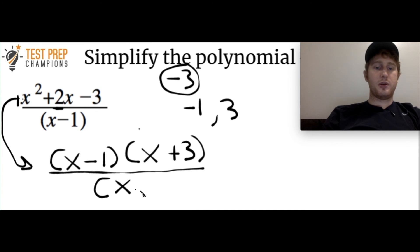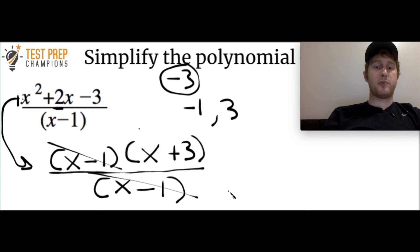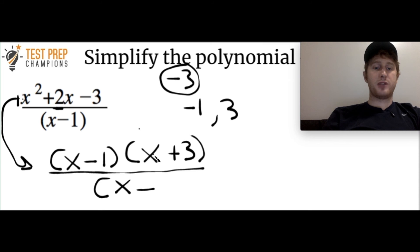Since we have negative 1 and 3, we rewrite the numerator as (x minus 1) times (x plus 3), and we keep the x minus 1 in the denominator. We cancel the x minus 1 from the numerator and the denominator, and after all that work we are left with x plus 3. If you got x plus 3, good job — this is a harder type of problem.